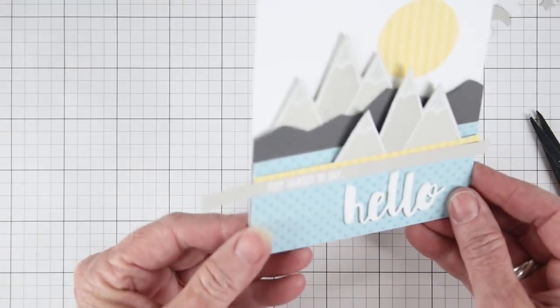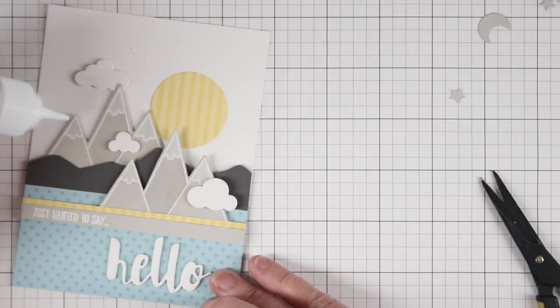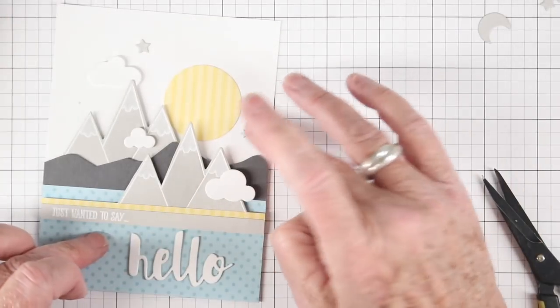I've added my clouds with small pieces of foam tape and now I'm just adding some Simon Says Stamp craft tacky glue down onto the cardstock to add my stars.